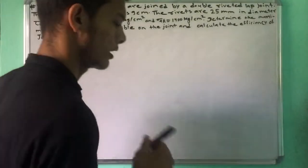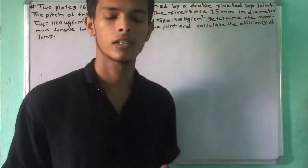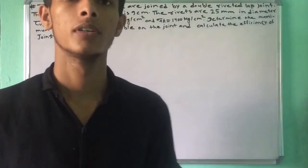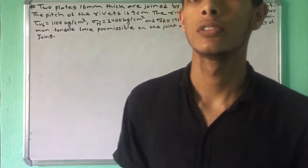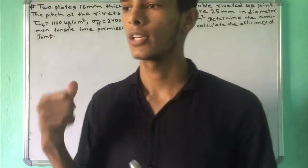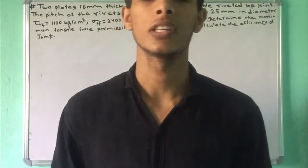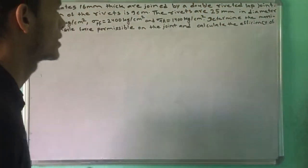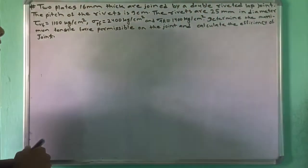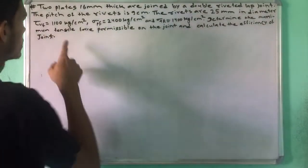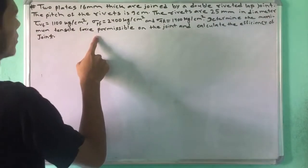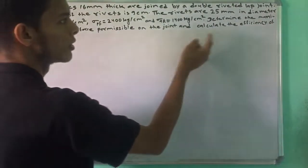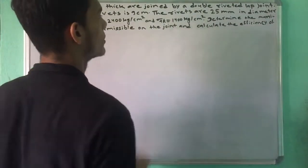Hello, my name is Structural Design and Drawing. This is the Numerical, First Unit. This is the maximum strength of the joint — it has a maximum strength of the joint and it has a lot of efficiency.